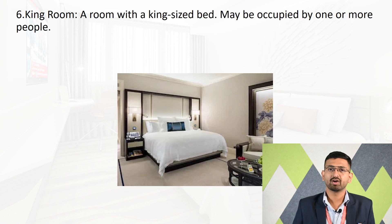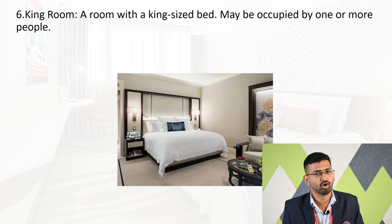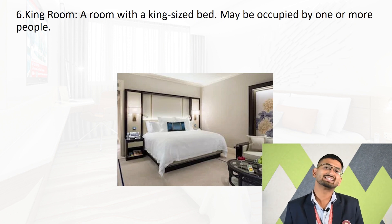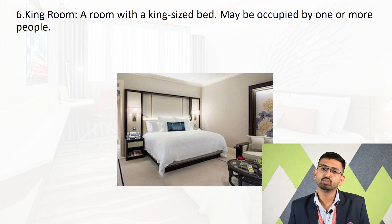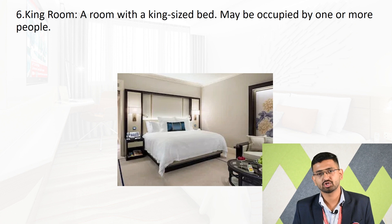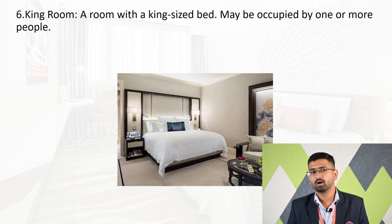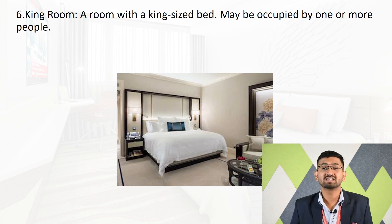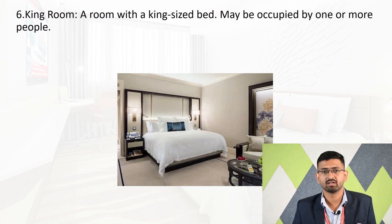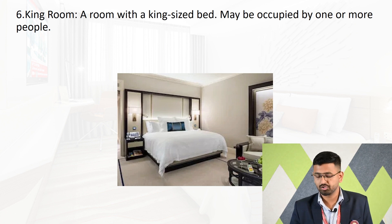The king room is a room with a king-size bed that may be occupied by one or more people. The king-size bed is known as the largest bed in the hotel, so a room which has a king-size bed is called a king room.